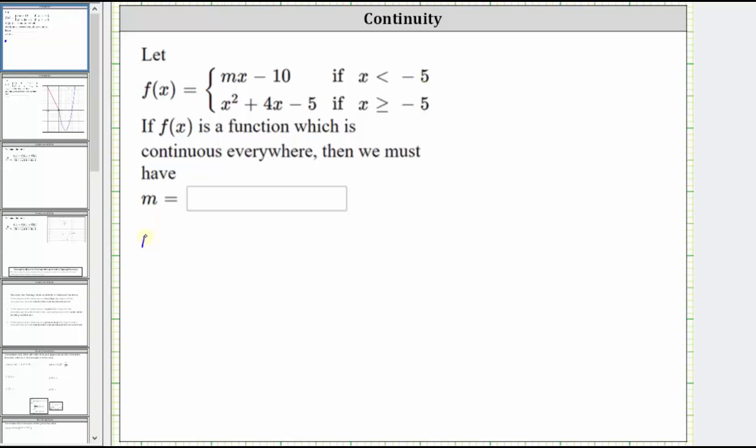Or more specifically, mx minus 10 must equal x squared plus four x minus five when x equals negative five. If the two function rules give the same function value or y value at x equals negative five, then the function would be continuous everywhere.